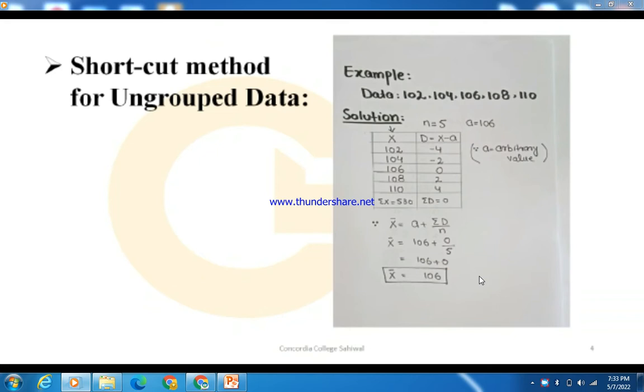We have data given here: 102, 104, 106, 108, and 110. How to find the mean by Shortcut Method for Ungrouped Data?